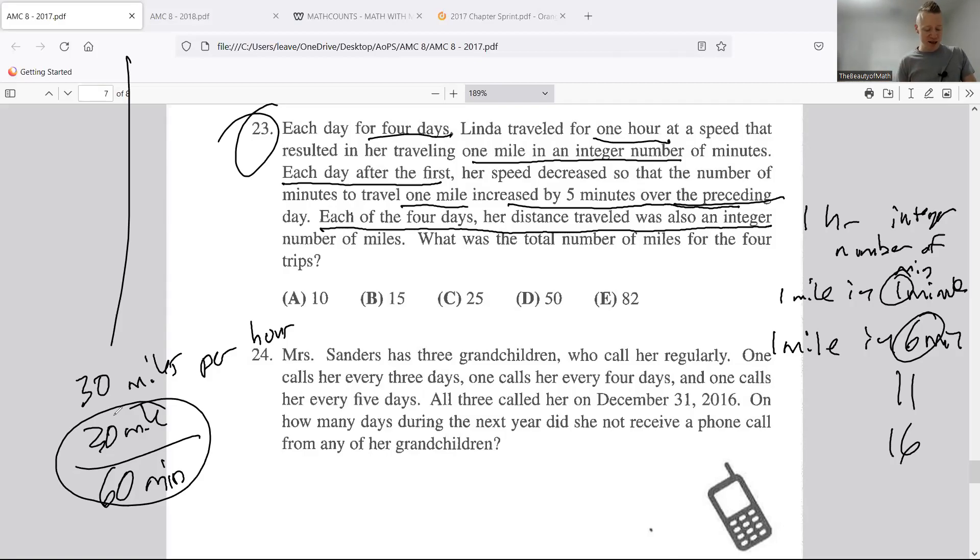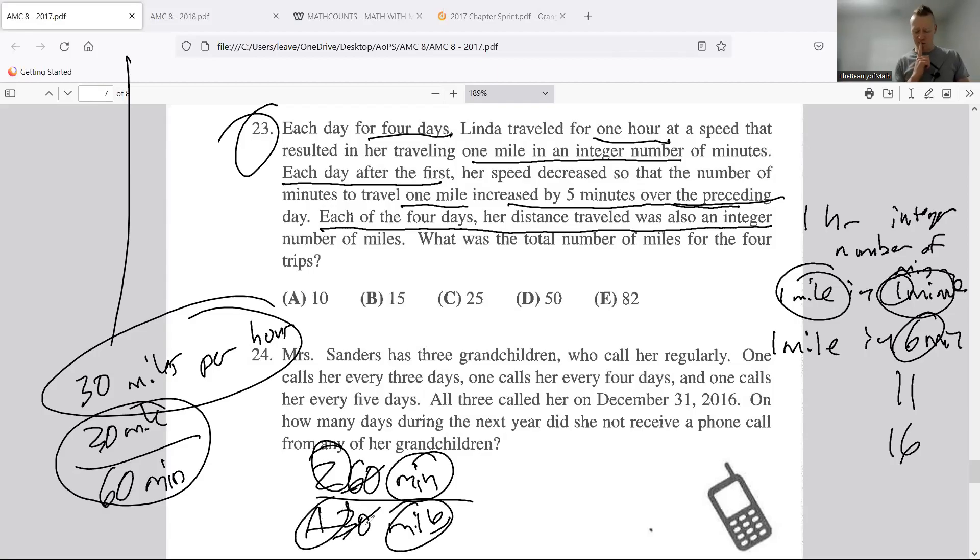If I do thirty miles in sixty minutes, I kind of want to go minutes for one mile. Maybe it would be better if I switch this. Rather than a speed of thirty miles per hour, let's do sixty minutes for thirty miles. Now I could put thirty into sixty. Oh look, two minutes in one mile. Interesting. Could the next day I do seven minutes for one mile? Actually it's going to go down, so maybe this is the bottom end and the previous day you would do seven.